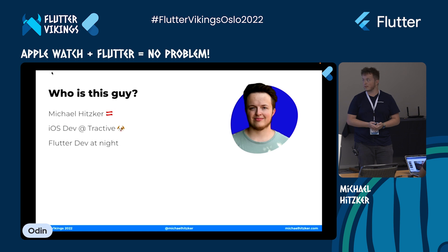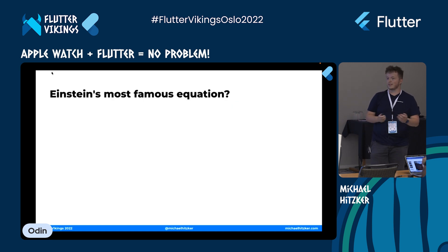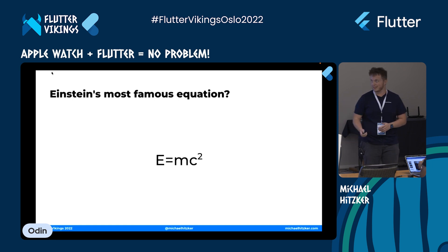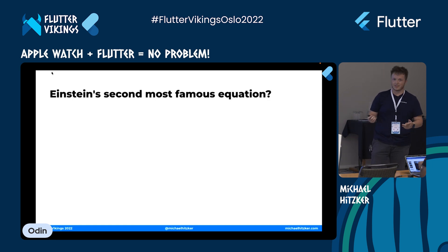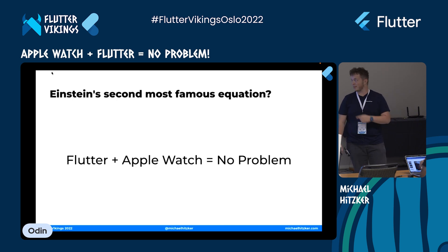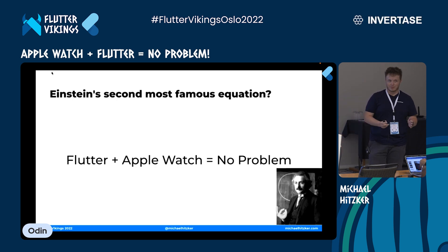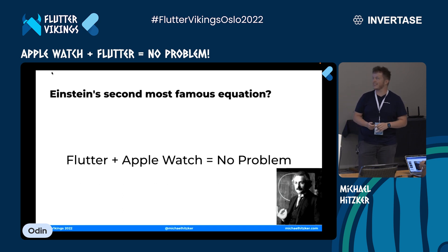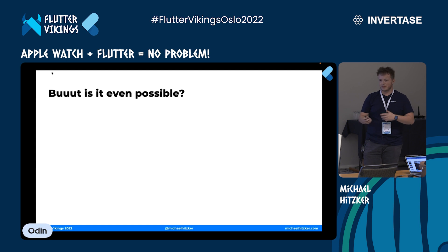When I'm not developing our apps, I'm a Flutter dev on the side at night with some side projects. But let's come to the fun part — what's Einstein's most famous equation? E equals mc squared. And his second most famous? Flutter and Apple Watch — no problem. I'm no mathematician but it sounds convincing, and Mr. Einstein approves.